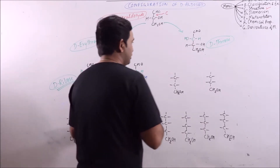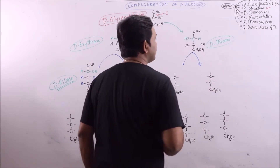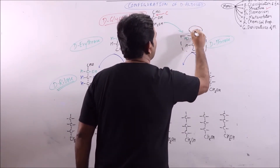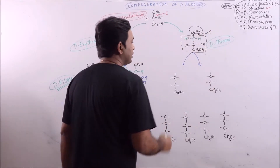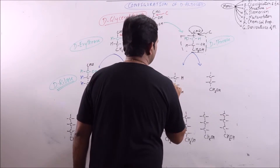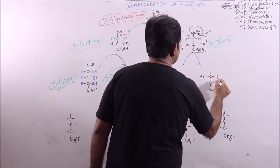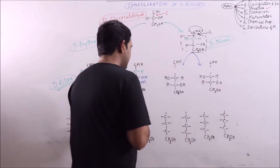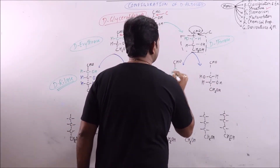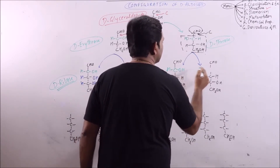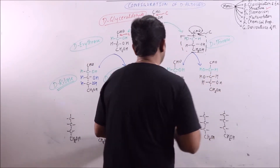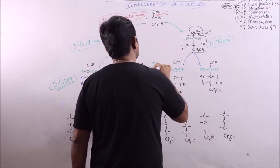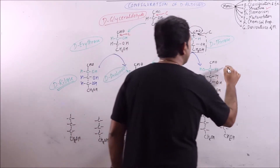In the same way, if the procedure is repeated for D-Threose, this region will remain the same and the new carbon is added in between. The existing arrangement of H and OH remains intact, and CHO remains at the same position. The difference is created by the new carbon atom with H and OH. As a result, we will obtain D-Xylose and D-Lixose.